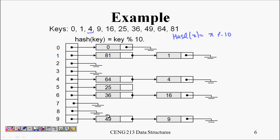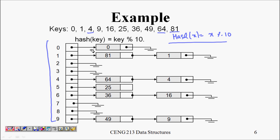36 also maps to cell 6 and becomes the new front of that list. 49 maps to cell 9 and pushes 9 forward. 64 maps to cell 4 and pushes 4 forward. 81 maps to cell 1 and pushes 1 forward. The hash table now holds pointers to these linked lists, allowing collision handling.